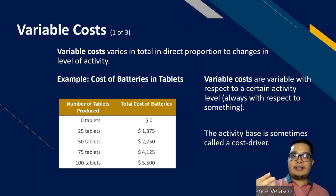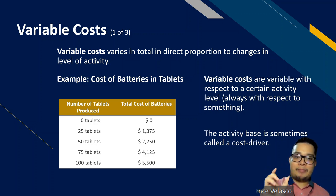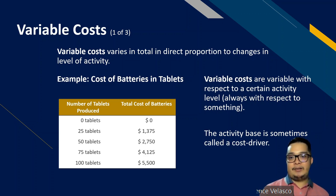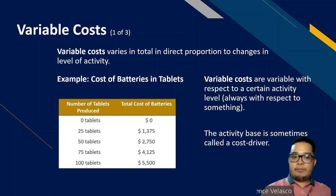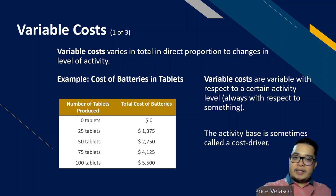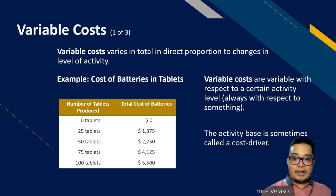We say that it is variable with respect to volume sold. When we tag an item as variable cost, we always need to understand: variable with respect to what? Always with respect to some activity level. The second important characteristic is that variable cost changes in direct proportion to changes in level of activity — when the level of activity increases, total variable costs also increase.